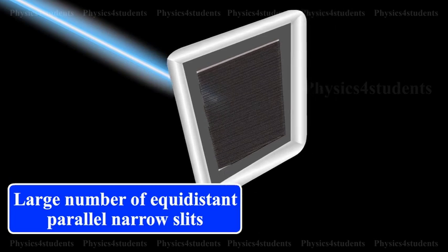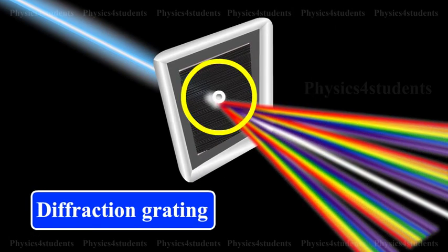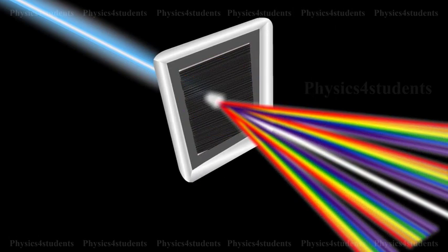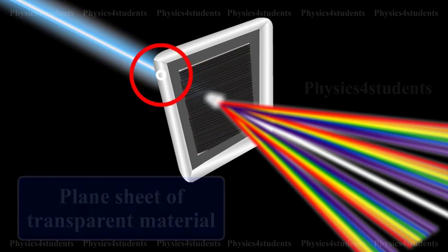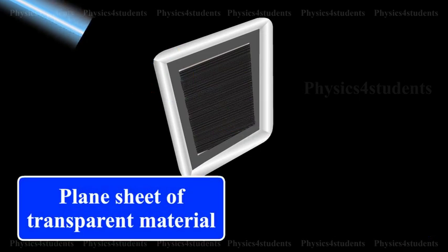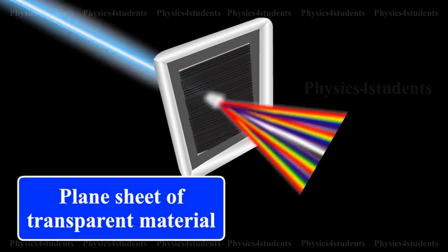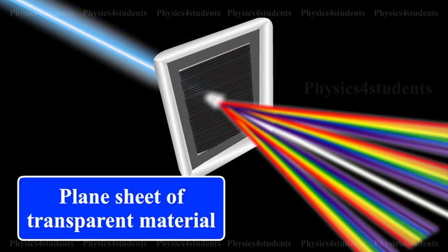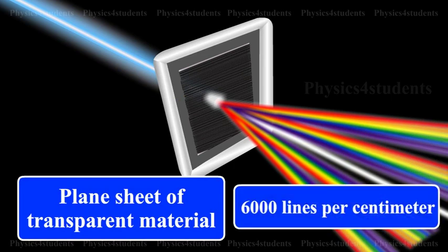The plane transmission grating is a plane sheet of transparent material on which opaque rulings are made with a fine diamond pointer. The modern commercial form of grating contains about 6000 lines per centimeter.